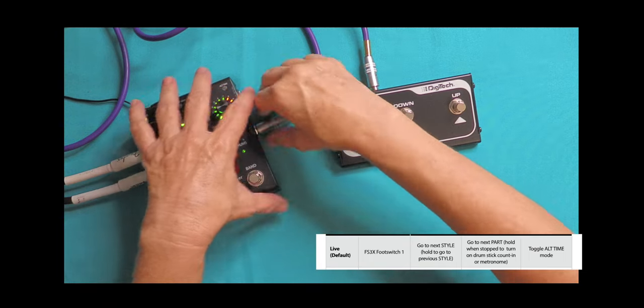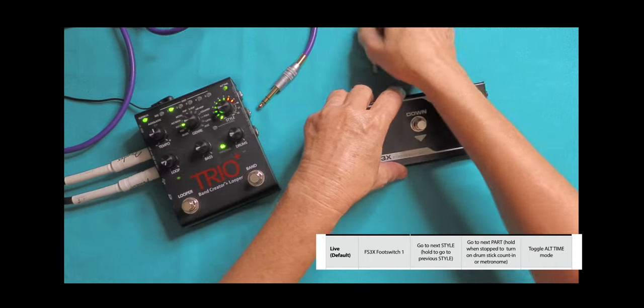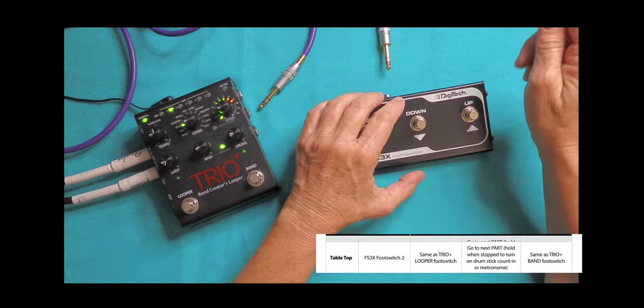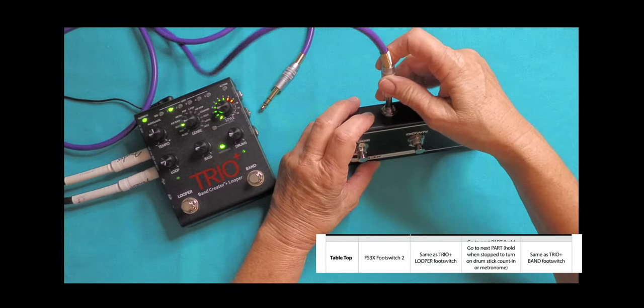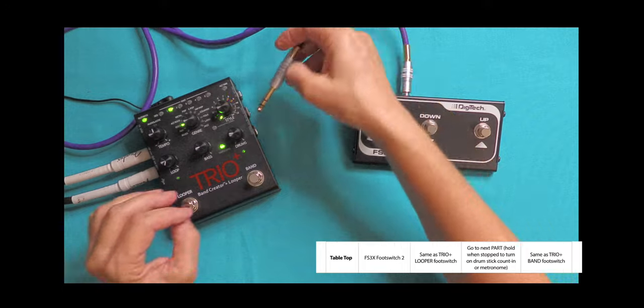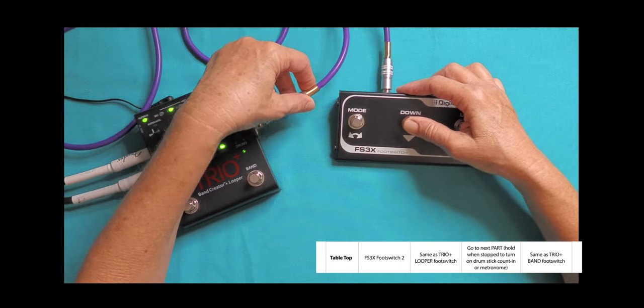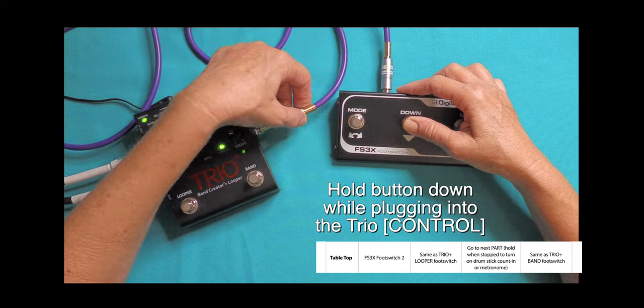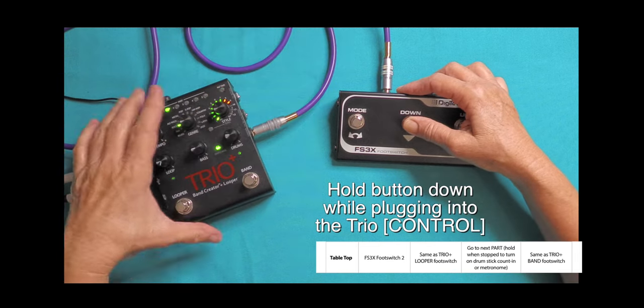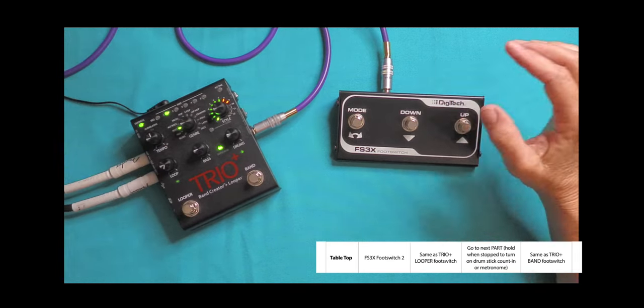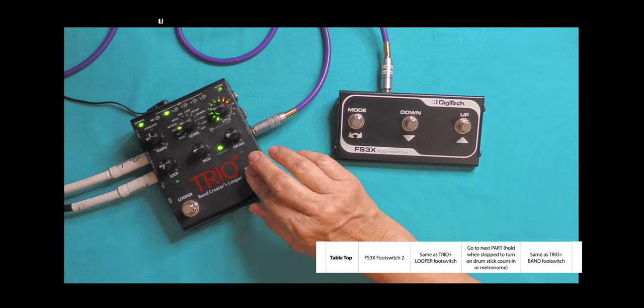Now we're going to unplug everything and we're going to set it to the tabletop mode. So we're going to plug in this end, and we're going to hold down the second switch, and we're going to plug it into the control input. Now our unit should be in tabletop mode. We'll get it going.